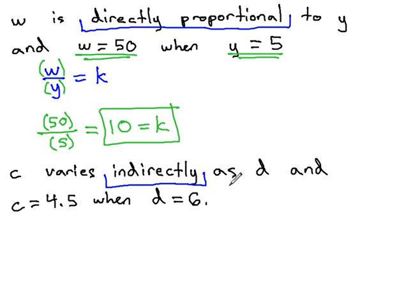Indirectly tells us we're going to multiply the two variables to get our constant. We multiply c times d and that will equal our constant. This constant is what we're looking for. We find that constant with the other information.